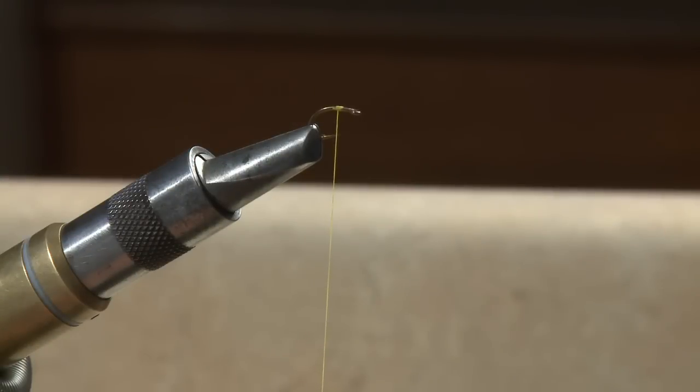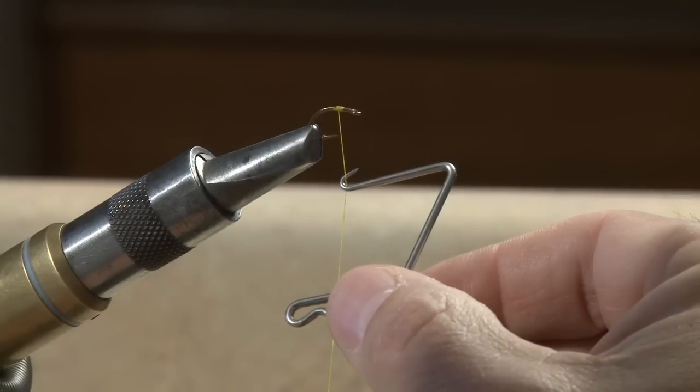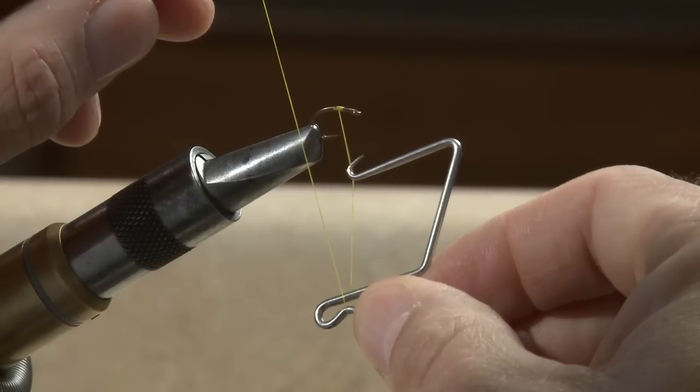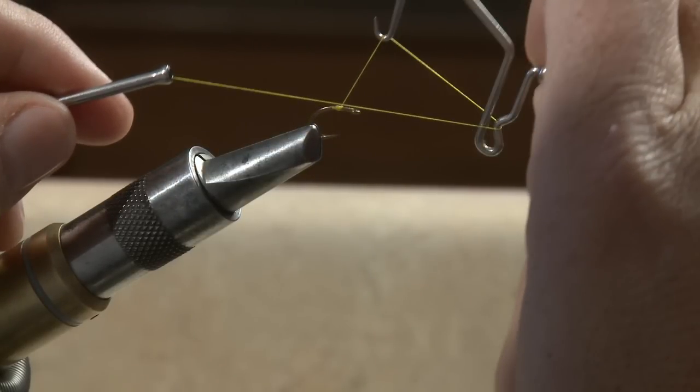Once a fly is completed and ready to whip finish, push the hook end of the tool onto the thread up near the fly. Pass the thread around the indented portion of the tool like so. Now pull everything up to a horizontal orientation.